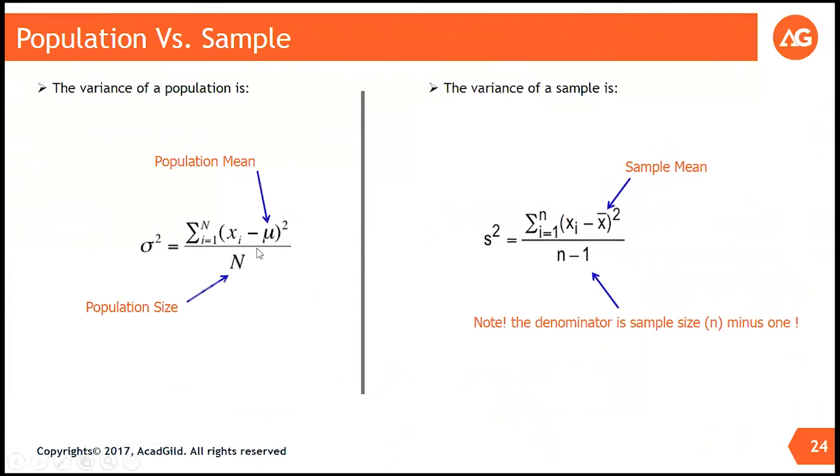Kindly note that when we use population, calculate the population variance, we do not subtract the 1. But when we calculate the sample variance, we always subtract 1 from the sample size. This is not what we do when we calculate mean. When we calculate population mean mu, we divide it by capital N, upper case n.